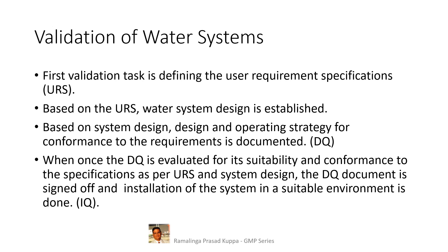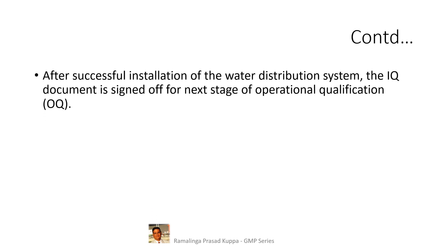IQ is initiated after the DQ document approval is signed off. Installation is done in a well-ventilated, accessible area with adequate space for routine cleaning and maintenance. It is important that the water treatment area is maintained clean and dry at all times, and there should not be any leaks in the entire treatment system or in the transfer lines. It is recommended that there should be access control to the water treatment area. After successful installation of the water distribution system, the IQ document is signed off for the next stage of operational qualification, that is OQ.